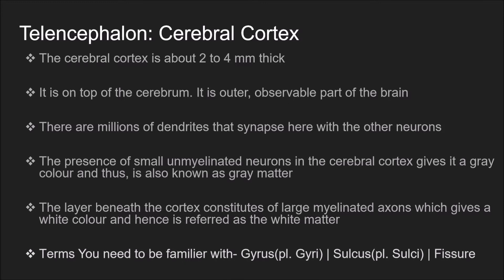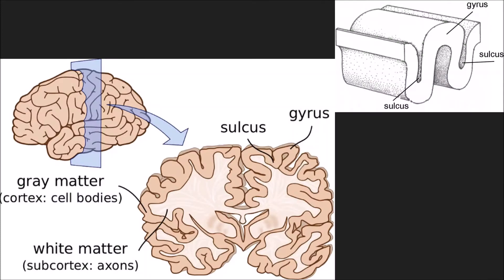There are three terms you need to be familiar with. The first is gyrus, or in plural, gyri. The second is sulcus and the third is fissure. Gyrus is basically a bump in the brain and sulcus is a cut or a groove — a long deep line that is cut in the surface of something. If a sulcus is deeper than normal, then it is known as a fissure.